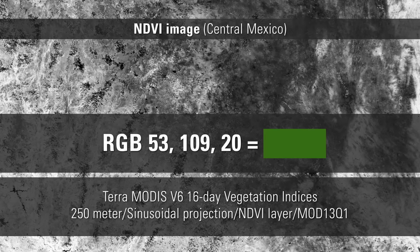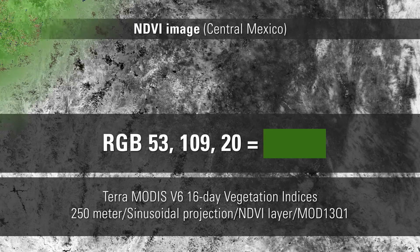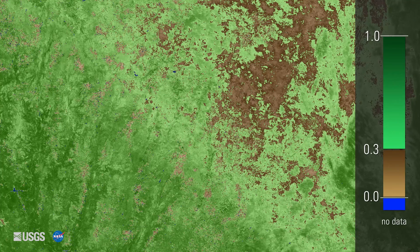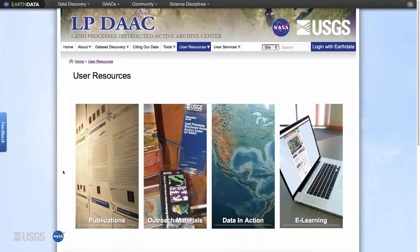A color map is an RGB assignment of colors to certain values. A color map can be added using most geographic information system, or GIS, software. Here's the same NDVI image shown using a color map. On this color map, 0.0001 to 0.3 is a color ramp ranging from light brown to dark brown. A light to dark green color ramp is used for values from 0.3001 to 1.0. Fill values are classified as blue.